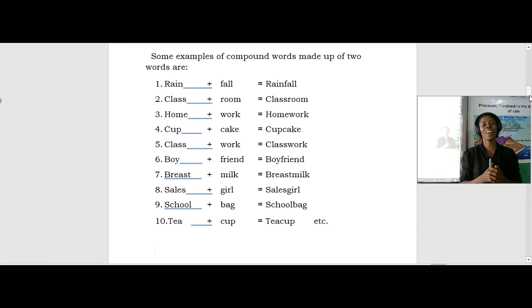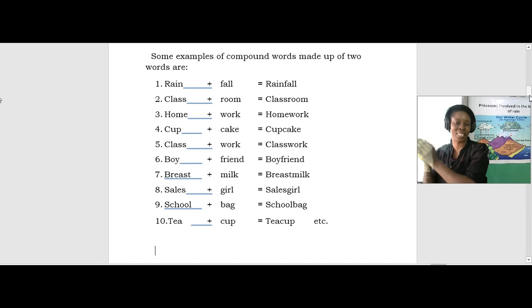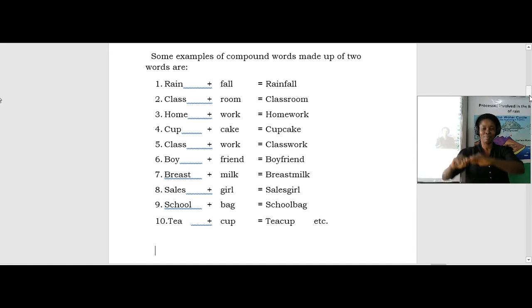Bedroom. Another good example of compound word. Bed is a thing. It's a word that can stand on its own. The room is also another word that can stand on its own. Room and bed coming together to form one word which gives us bedroom. So bedroom is a compound word.